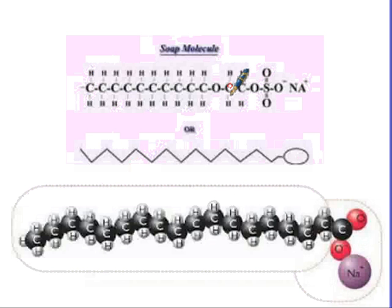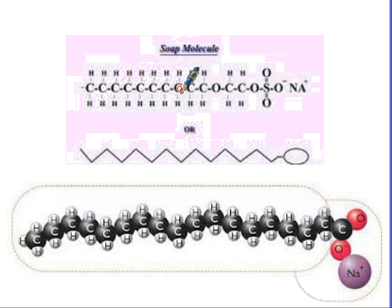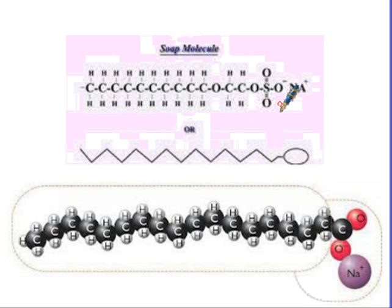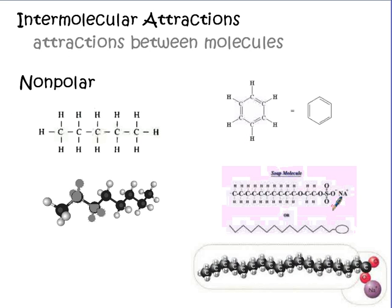This happens to be a soap molecule, which is quite interesting. One end of the molecule has a whole bunch of nonpolar carbons and hydrogens attached to each other, while the other end of the molecule is actually ionic — there's a sulfate group bonded to a sodium ion. So one end is nonpolar and likes to interact with nonpolar things, while the other end can interact with polar solvents like water. There's also a 3D picture of it.